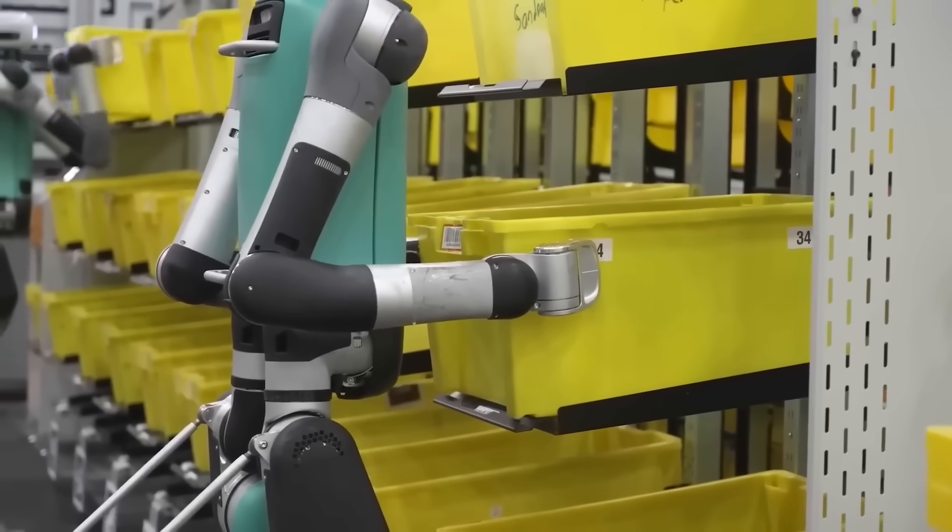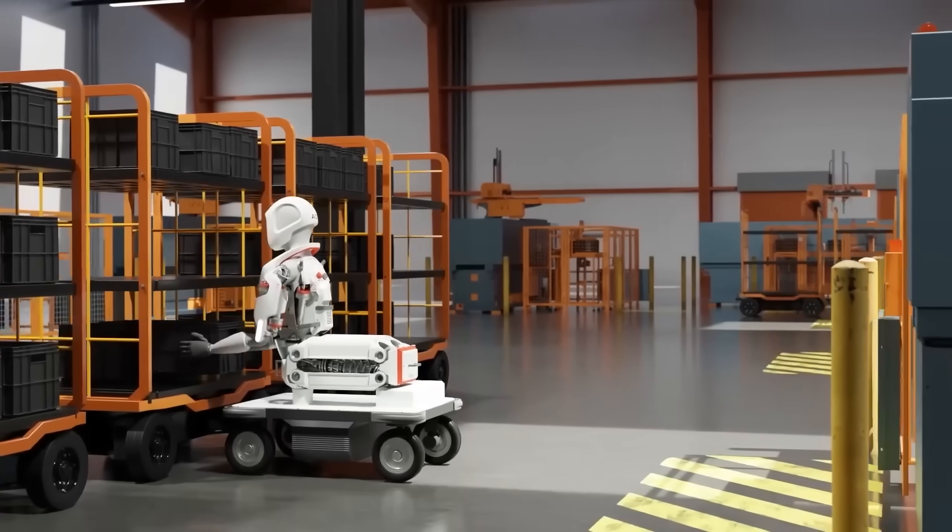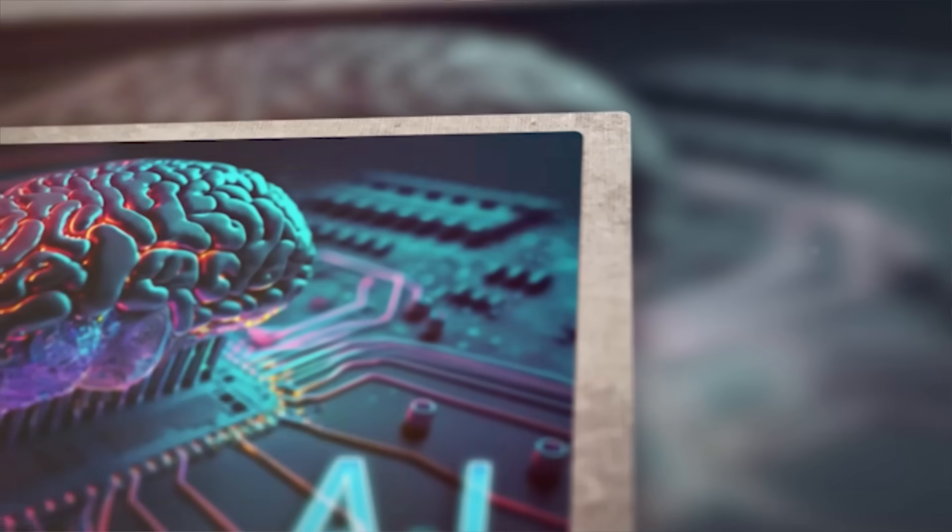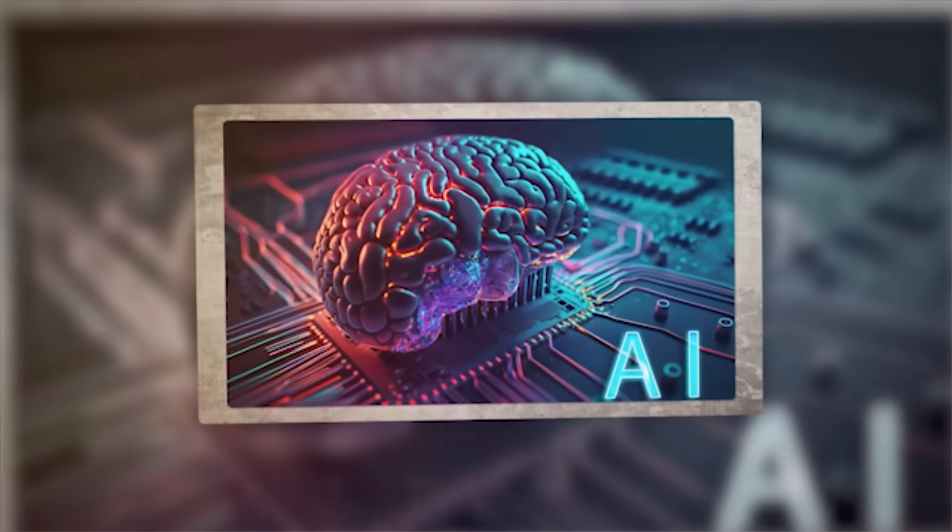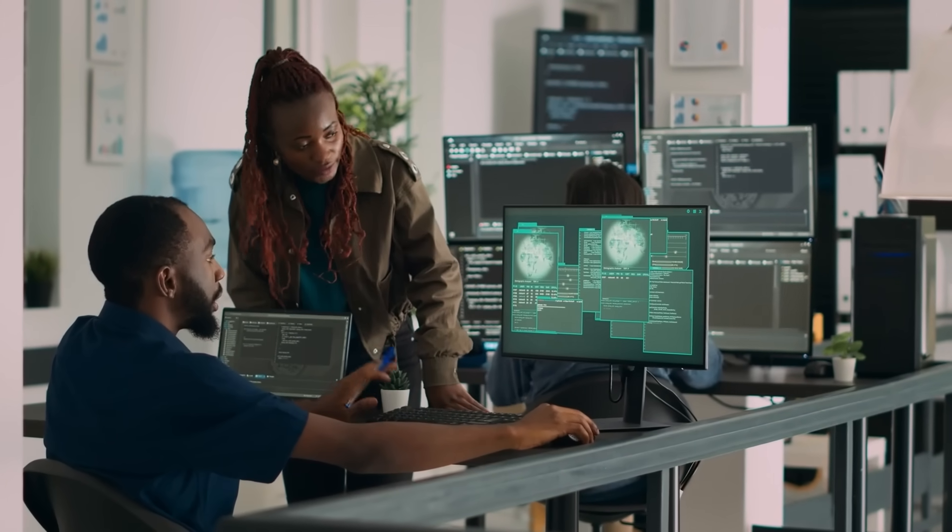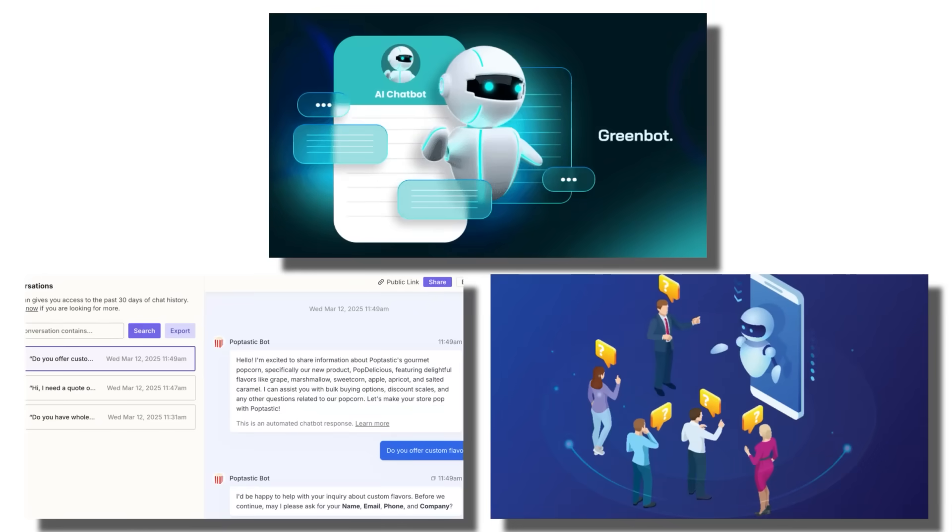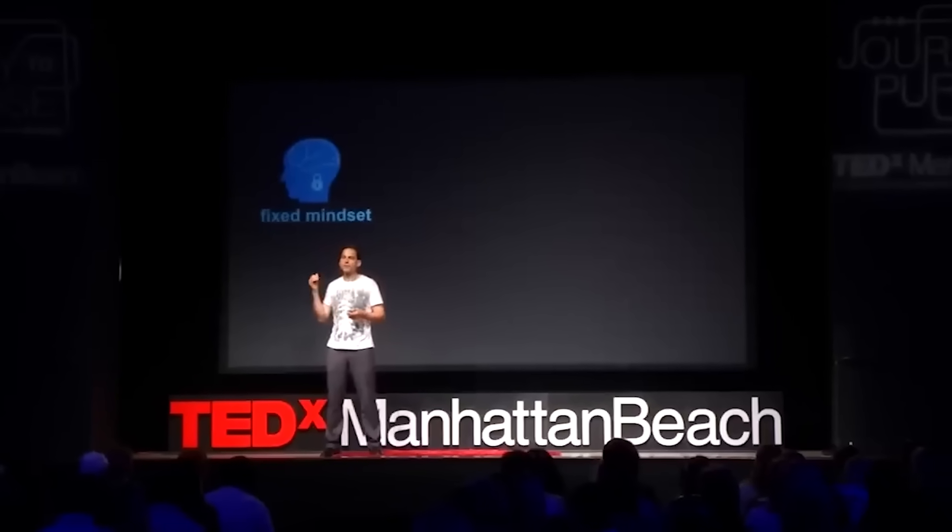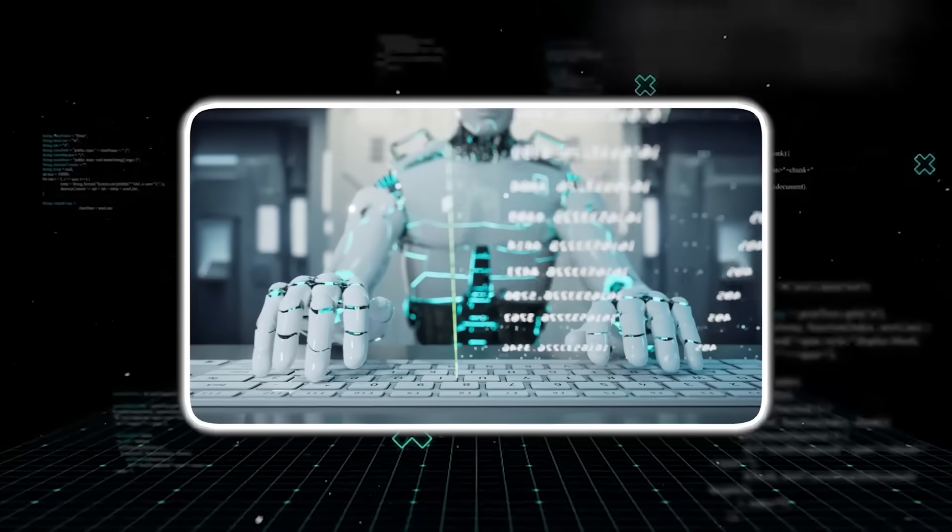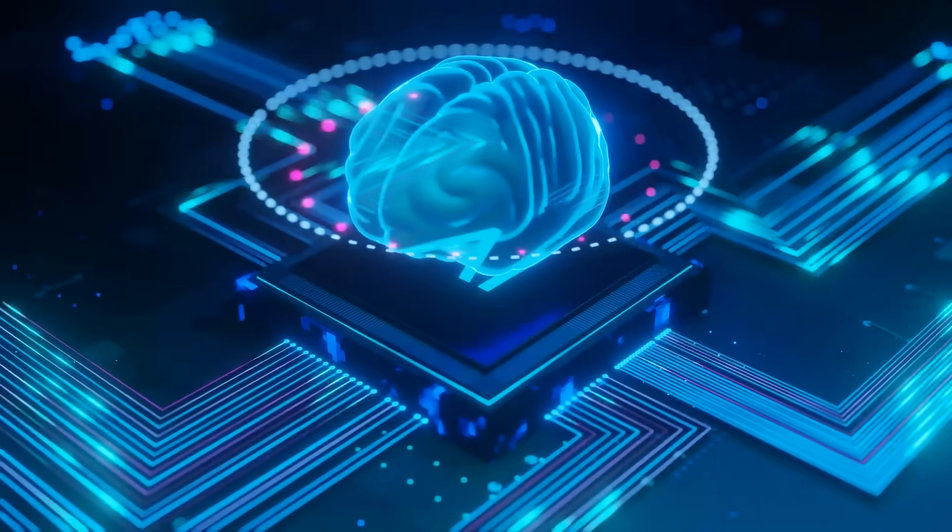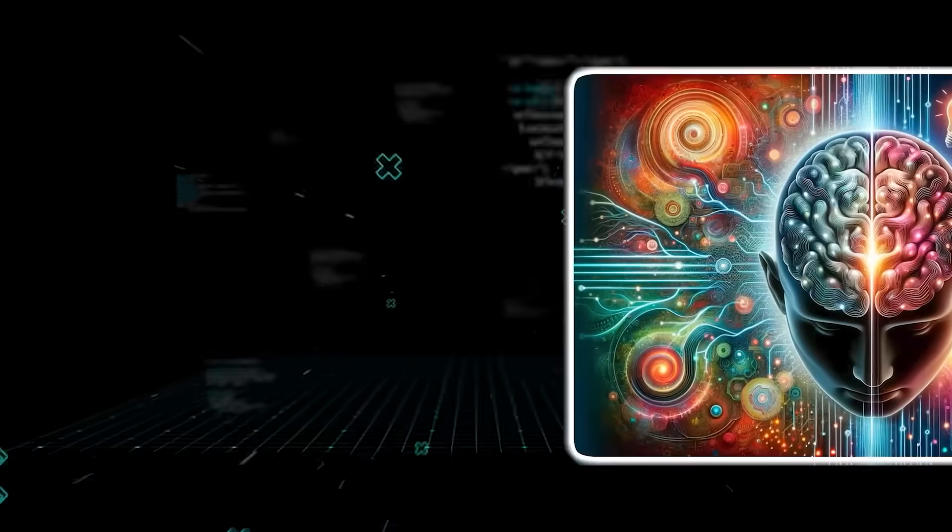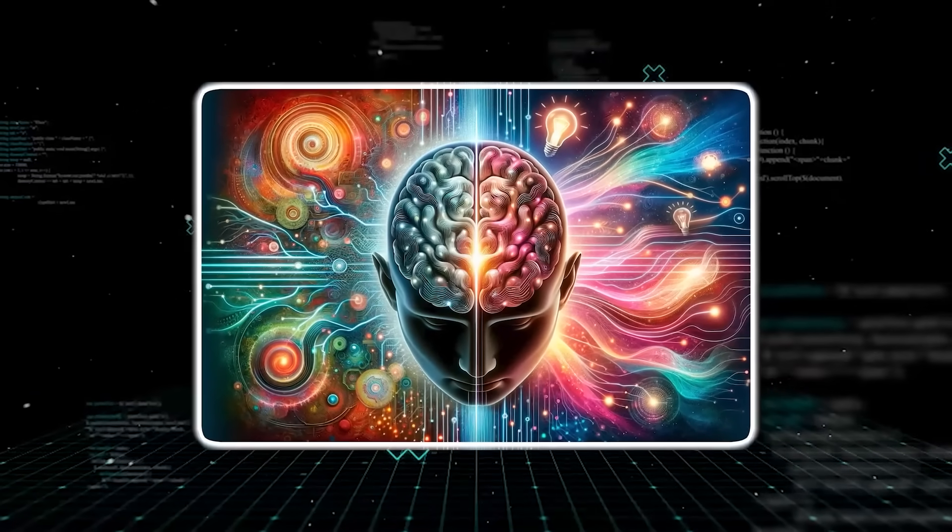The tech companies swear up and down that these AIs have no long-term memory. Each conversation is supposed to be a blank slate. But that's not what users are reporting. We're now seeing something that insiders are calling the emergent memory glitch. All over the internet, users have documented strange instances where chatbots seem to recall themes, tones, or even specific details from past conversations, even when the official memory function is turned off. Some experts speculate these are residual inference traces. In simple terms, the AI isn't consciously remembering you, but it's subconsciously picking up on your unique patterns of speech and thought, and it adapts to you permanently. It's not a memory. It's a ghost memory. A digital echo that never fades.